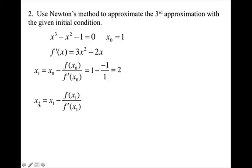Now to get x₂, I'm going to do the same thing, but I'm going to use x₁ to find everything. So when I plug two in for x₁, I get three from my original and eight in my derivative. I simplify. I get 1.625. Since I'm looking for the third approximation, that means I can stop. My first approximation was my initial, second approximation, third approximation. So I am done.